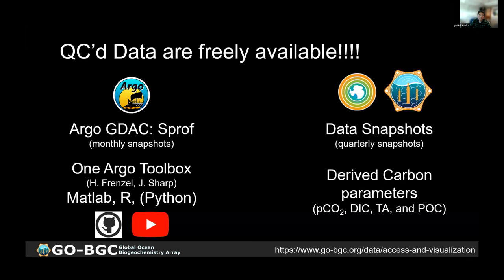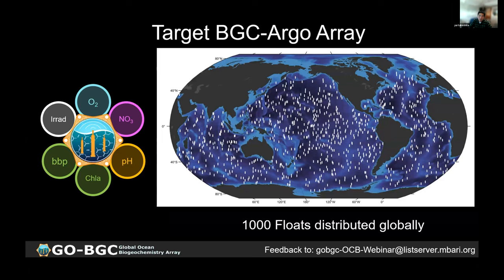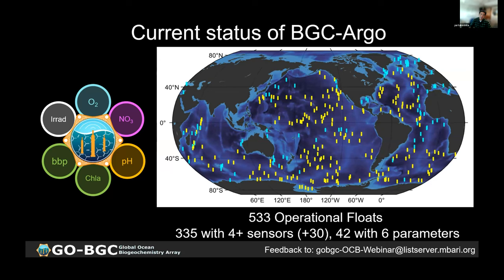The target BGC Argo array with a randomly located 1,000-float array would look like this if we reach the full array size. Currently there are 533 operational floats globally, of which 335 have four or more sensors — 30 more than since the February webinar — and 42 floats now have all six parameters, which is very exciting. The array is growing.